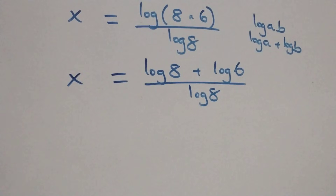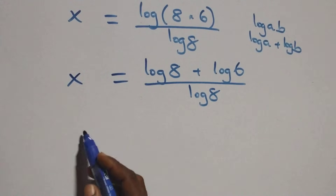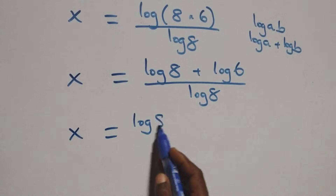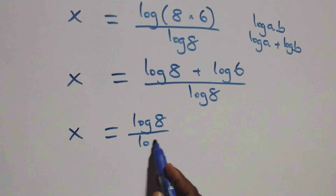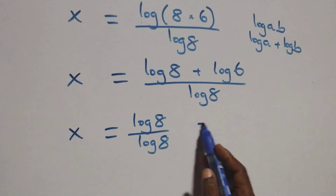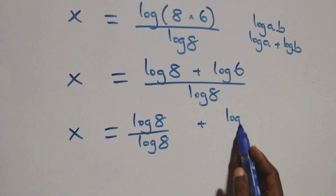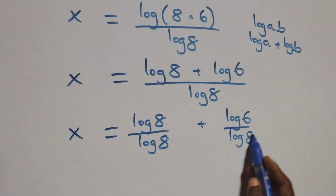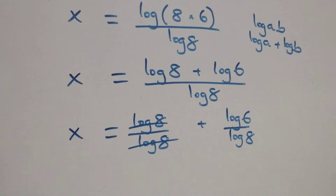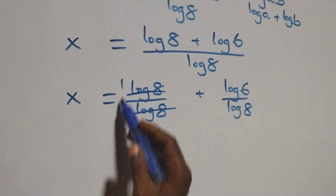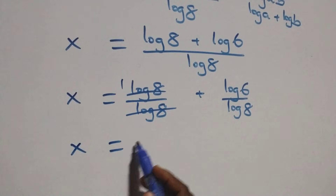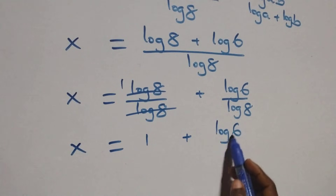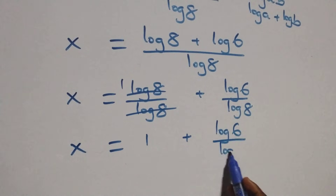We separate these into two fractions: x equals to log 8 over log 8 plus log 6 over log 8. Here log 8 cancels each other, giving us 1. Which implies x equals to 1 plus log 6 over log 8.